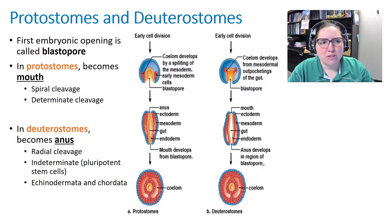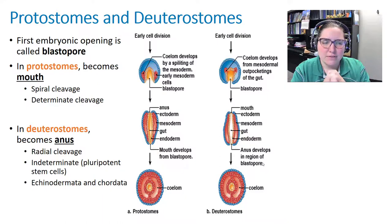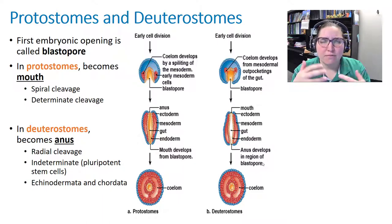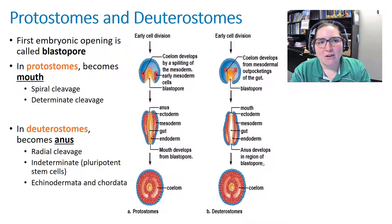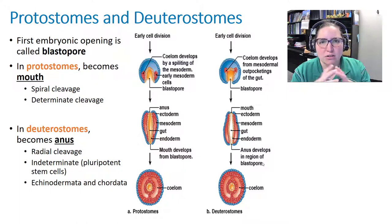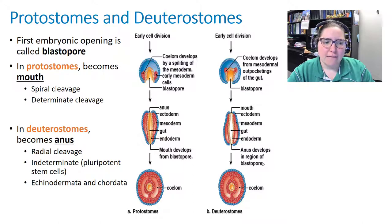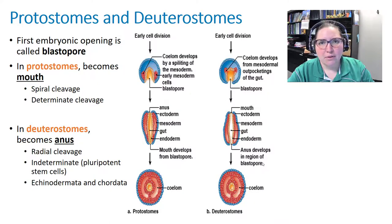In development, sperm and egg unite, the cell divides, forms a ball of cells, then an opening forms called the blastopore. In protostomes, that blastopore becomes the mouth; they also have spiral and determinate cleavage. In deuterostomes, the blastopore becomes the anus; they have radial and indeterminate cleavage with pluripotent stem cells. Deuterostomes include Echinodermata and Chordata.